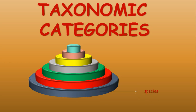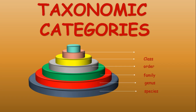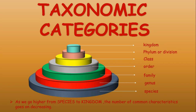The lowest category is species, followed by genus, then family, order, class, phylum or division, and the topmost category is the kingdom. As we go higher from species to kingdom, the number of common characteristics among organisms decreases. Species have the maximum number of common characteristics, whereas in the kingdom there are the least common characteristics.